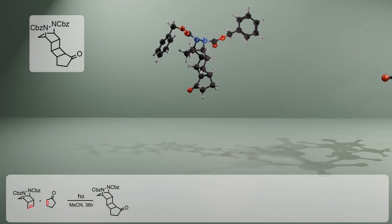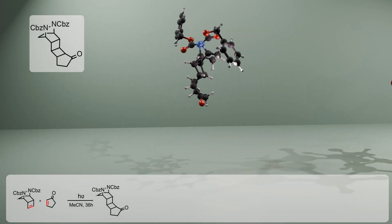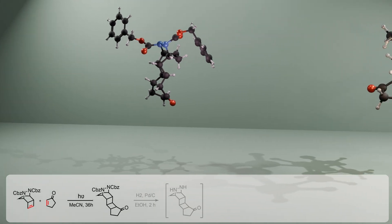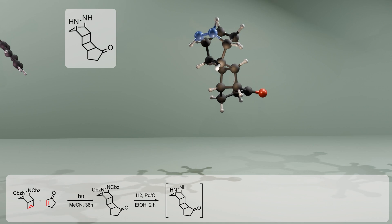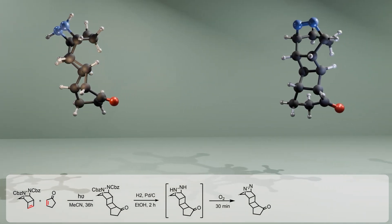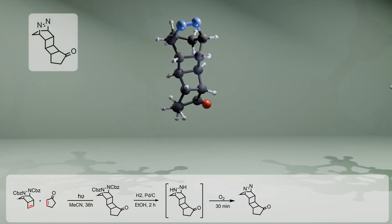In the next step, cyclobutene system and cyclopentanone were joined through a photoinduced 2+2 cycloaddition to deliver pentacyclic adduct. Then nitrogen is deprotected by a controlled hydrogenolysis to avoid rupture of the weak nitrogen-nitrogen bond. The hydrazine intermediate is directly oxidized in the same reaction mixture with oxygen gas to provide the azo compound.